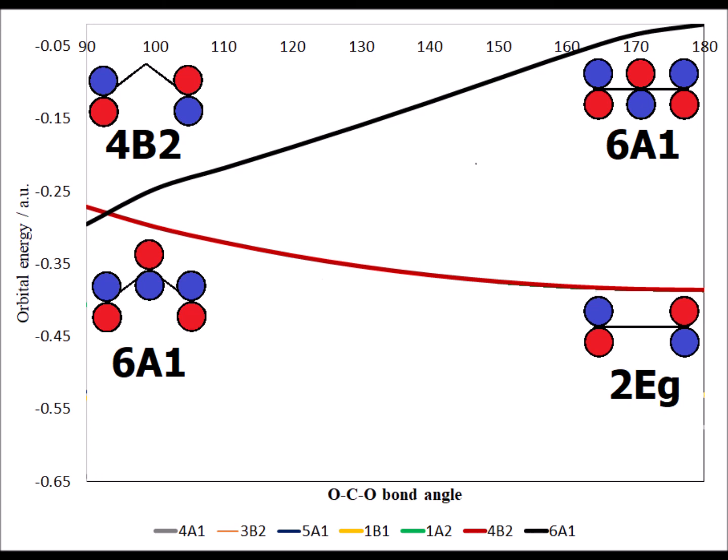4B2 starts out slightly higher in energy than 6A1 when the molecule is most bent, making 4B2 temporarily a virtual, unoccupied orbital. However, it soon crosses energies with 6A1, which then rapidly increases in energy as the molecule becomes more linear.